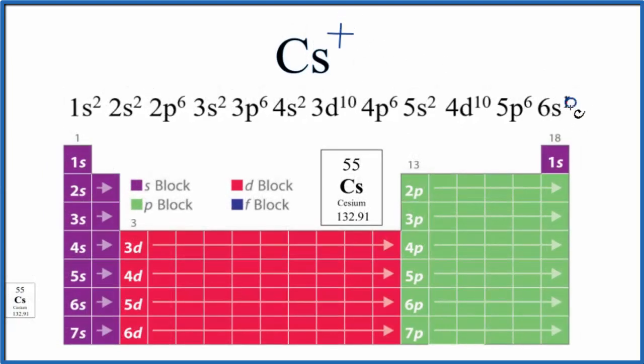Often you'll see it just then written as a zero. So we've lost it. We have 54. We're still cesium, but now we have this positive charge. We're an ion.